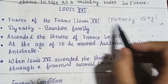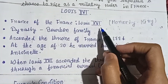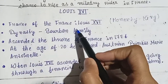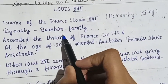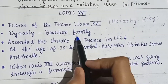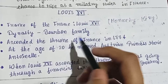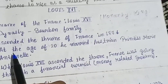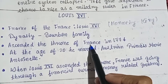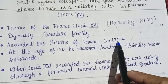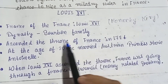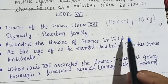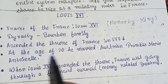Louis XVI was the French king. He belonged to the Bourbon dynasty. The Bourbon dynasty ascended the throne of France in 1774.